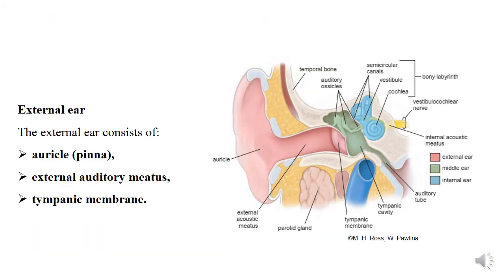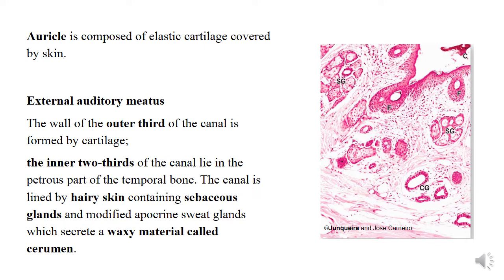External ear consists of three parts: pinna or auricle, external auditory meatus, and tympanic membrane. Auricle is composed of elastic cartilage covered by the skin. External auditory meatus connects auricle and tympanic membrane. It consists of cartilage and bone — the outer third formed by cartilage, the inner two-thirds formed by temporal bone. The canal is lined by skin with hair and sebaceous glands, and also modified apocrine sweat glands that secrete a waxy material called cerumen.